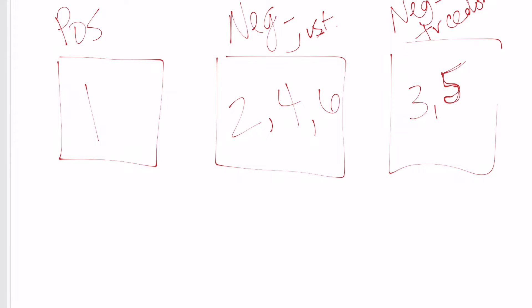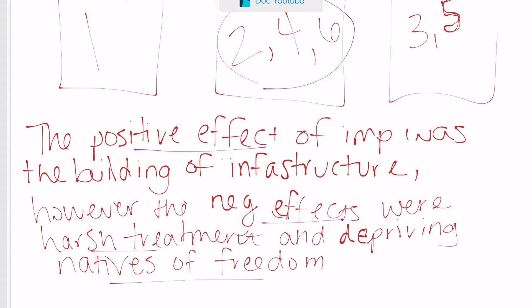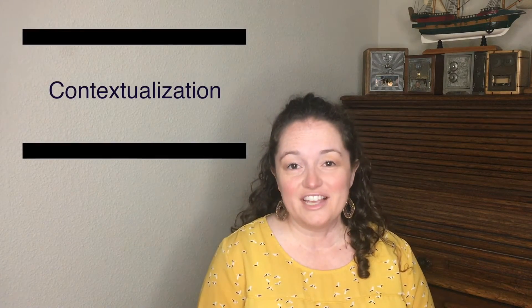Now it's super easy to write my thesis because I need all three of these to be in the thesis. Here's what you would write for a possible thesis: 'The positive effect of imperialism was the building of infrastructure. However, the negative effects were harsh treatment and depriving natives of freedom.' Now that you've got your thesis, it's time to write your contextualization.